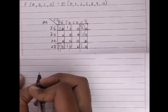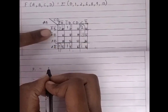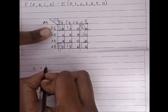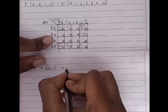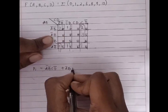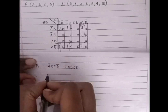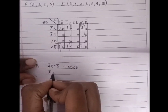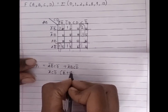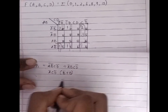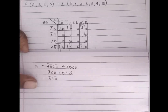The remaining pair is: A'B'CD' + A'BCD'. Taking the common variables: A' is common, C is common, D' is common, while B' and B are not common, so we eliminate them. This leaves A'CD' as the answer for the pair.